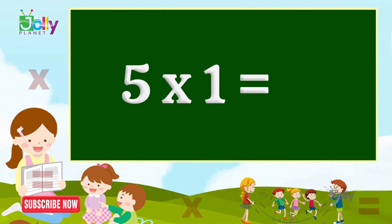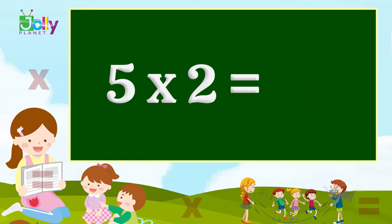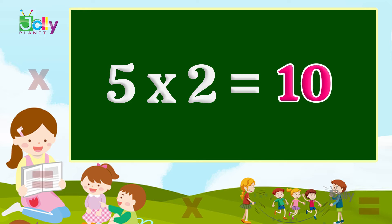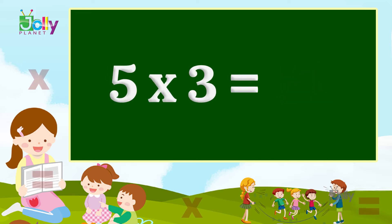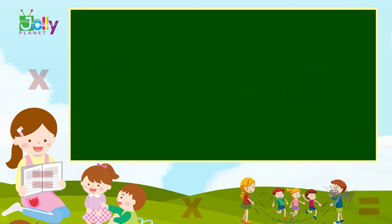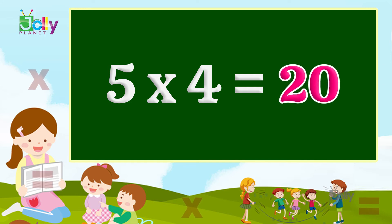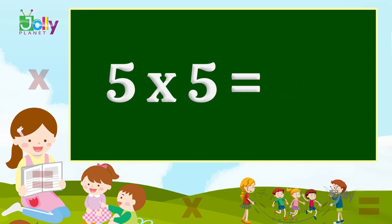Five one is five. Five two is ten. Five three is fifteen. Five four is twenty. Five five is twenty-five.